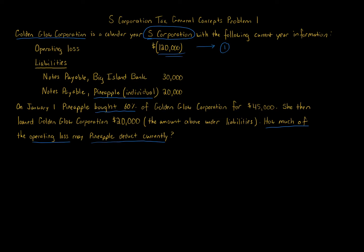Step one: take the total operating loss and multiply by the ownership percentage. With S corporations — 'S' standing for small business, or 'simple' — the rules are not flexible. Allocation is straightforward based on stock ownership. Pineapple owns 60%, so we take $120,000 times 60%, giving us $72,000 of allocated loss. That is the most loss attributable to Pineapple.